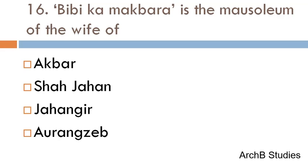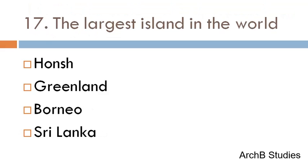Bibi Ka Maqbara is the mausoleum of the wife of — Akbar, Shah Jahan, Jahangir, or Aurangzeb? The correct answer is Aurangzeb.